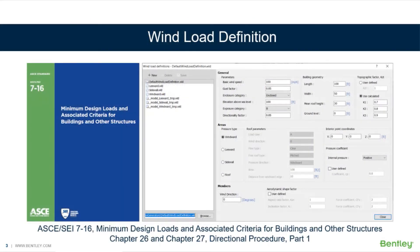RAM Elements uses ASCE 7-16, Chapter 26 and 27 to calculate the design wind pressures for building structures. Since all wind calculations closely follow the code requirements, it is recommended that you are familiar with the ASCE 7 and have access to the code while creating your wind definitions, to ensure that all parameters are set appropriately, and to ensure that all pressure types and wind directions are accounted for.